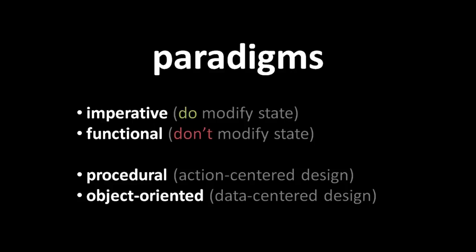In programming, paradigm refers to a fundamental approach, a style, of considering and solving problems. Most programming follows either an imperative paradigm or alternatively a functional paradigm. At the same time, most programming follows either a procedural paradigm or alternatively an object-oriented paradigm. So we have four combinations: imperative and procedural, imperative and object-oriented, functional and procedural, or functional and object-oriented.